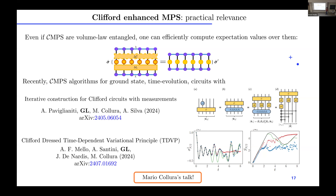So these are custom states with all the magic of Haar states, all the entanglement of Haar states, but still are classically simulatable — at least for computing expectation values. There are also nice algorithms being studied in recent months that actually use this Clifford enhancement for practical numerical algorithms — for instance, for DMRG, ground state computation, time evolution, and circuits with measurements. Mario will speak more about this kind of algorithm tomorrow.